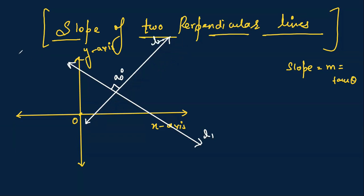Line L1 is making an angle of beta with the positive x-axis, and line L2 is making an angle of alpha with the positive x-axis. Now, since a straight line forms a straight angle of 180 degrees, if one portion is beta, then the other portion is 180 minus beta.